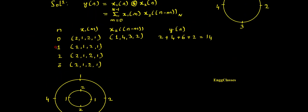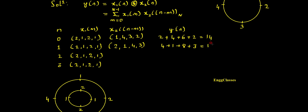For n=1, the signal x2(n-m) gets shifted to the right by one position. The last sample wraps around to the beginning, giving x2(1-m) = {2, 1, 4, 3}. Multiplying and adding: 2×2 = 4, plus 1×1 = 1, plus 4×2 = 8, plus 3×1 = 3. Summing gives y(1) = 16.